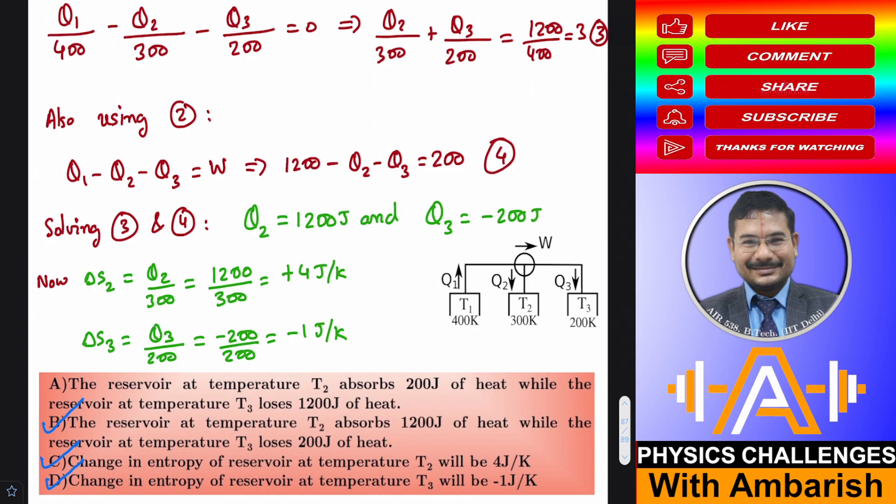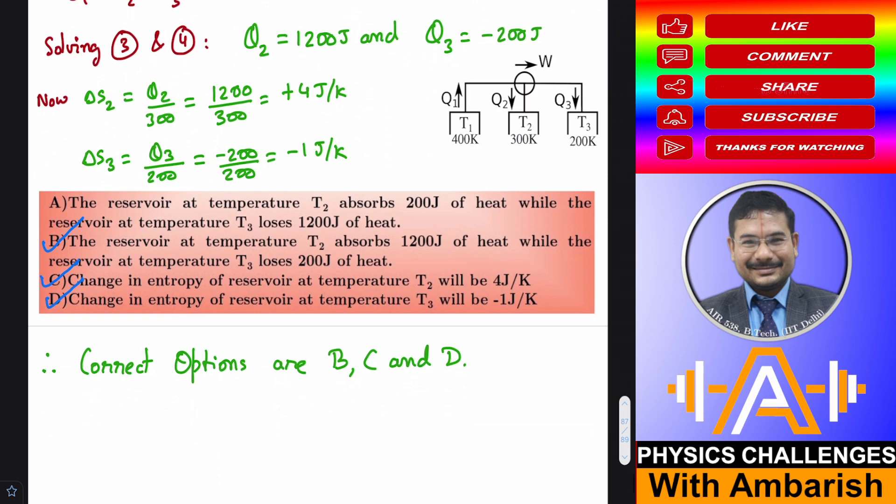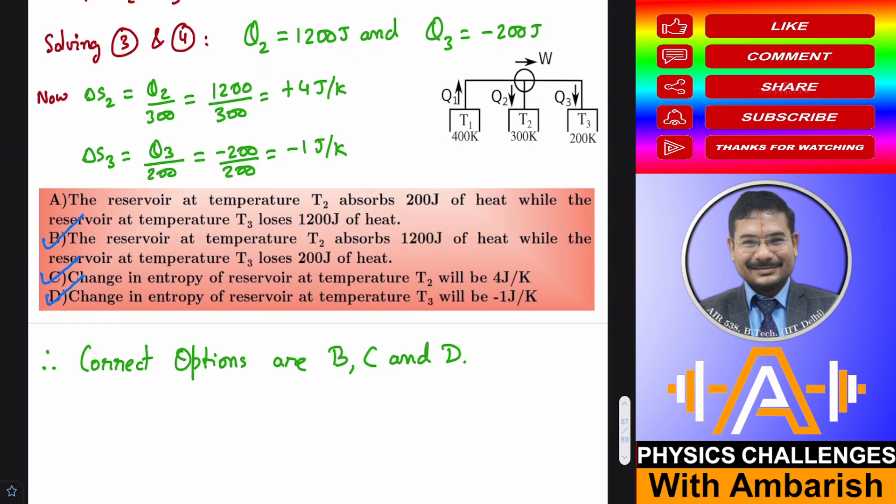So what does that give you? If you look at the options now, so look at the option B. Reservoir at T2 absorbs 1200 joule. So this is right.